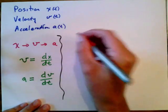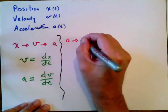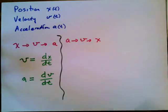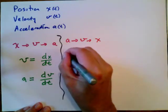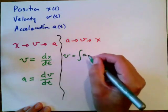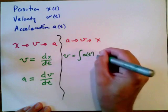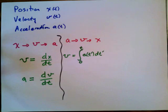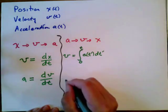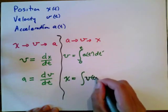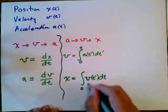Now suppose we want to go the other direction. Given a, we want to calculate v and then calculate x — in other words, given the acceleration, calculate the velocity and then calculate the position. Since we took a derivative before, in order to go the other direction we're going to have to do the opposite: we're going to have to take an integral. The integral of the acceleration as a function of time integrated over time, taking a definite integral from some time zero to some time t. This works in general. Likewise, if I want to calculate the position I take another integral, only now integrating the velocity as a function of time dt, integrating from zero to time t.